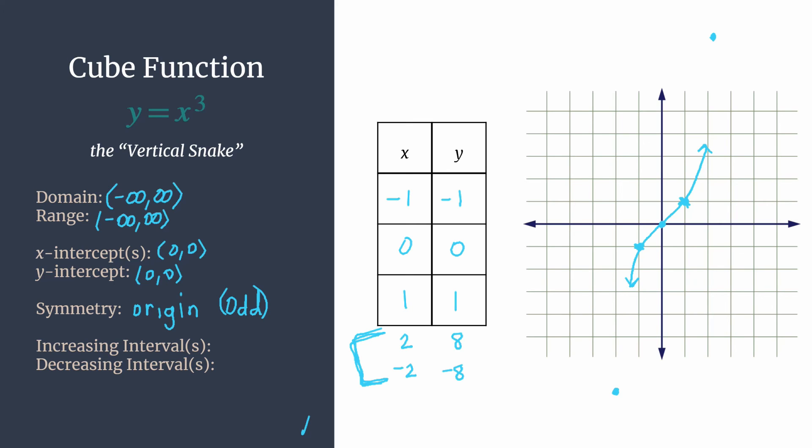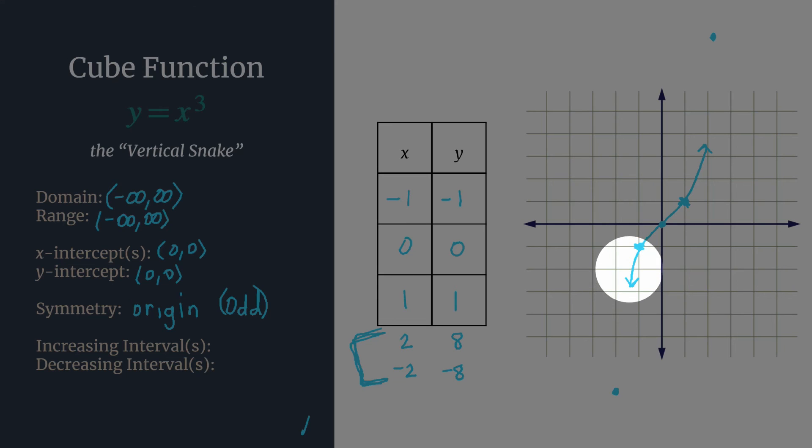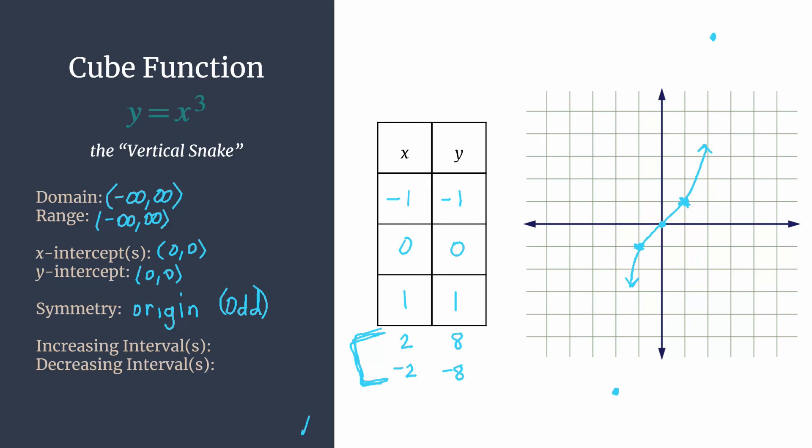So this graph is actually only increasing, and it's increasing over all real numbers. So look at that one more time, pencil on the graph. As you move to the right, your y's are increasing. So we'll say our increasing interval is actually over all real numbers. There are no decreasing intervals. So this is your cube function or your vertical snake.